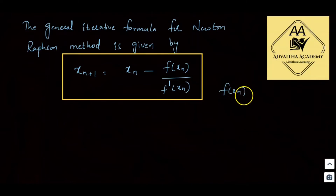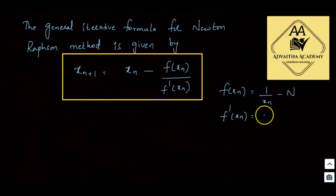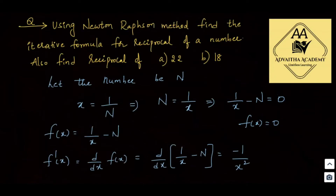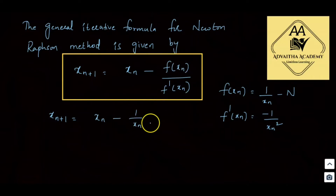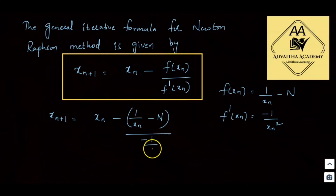We have f(xn) = 1 by xn minus n, and f'(xn) = minus 1 by xn squared. Substituting these into the general formula: xn+1 = xn minus (1 by xn minus n) divided by (minus 1 by xn squared).